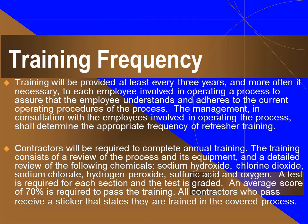Contractors will be required to complete annual training. This training consists of a review of the process and its equipment and a detailed review of the following chemicals: sodium hydroxide, chlorine dioxide, sodium chlorate, hydrogen peroxide, sulfuric acid, and oxygen. A test is required for each section and the test is graded. An average score of 70% is required to pass the training. All contractors who pass will receive a sticker that states that they are trained in the covered process.